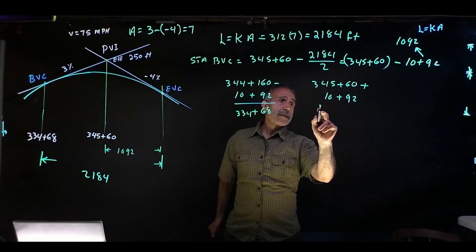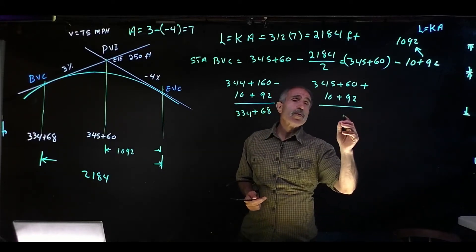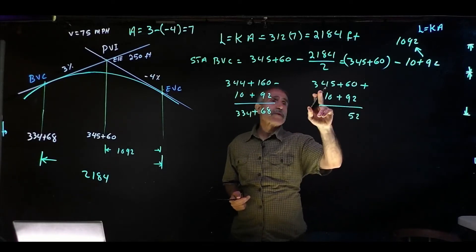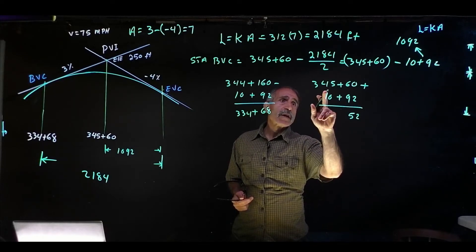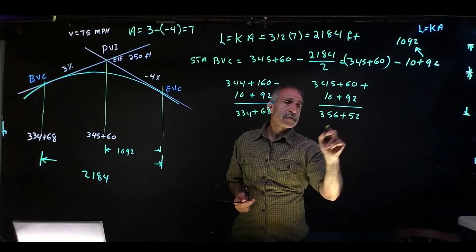So if I add this, 92 plus 60 becomes 152. I'm going to write down the 52 and take the 100, add it to this, so it becomes 345 plus 11, which becomes 356+52.